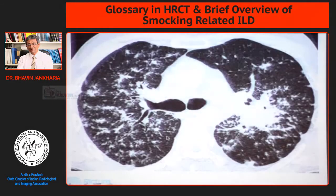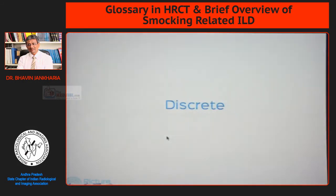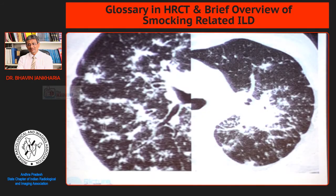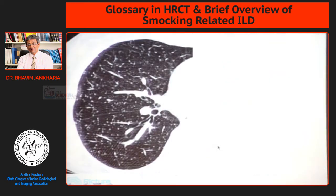You can also get discrete, well-defined nodules. These are well-defined where you see really nice well-defined nodules. These nodules have a perivascular course, a fissural course — some are along the fissure — and some are subpleural. This combination of fissural, subpleural, and peribroncho-vascular distribution of discrete nodules means we are dealing with sarcoidosis.